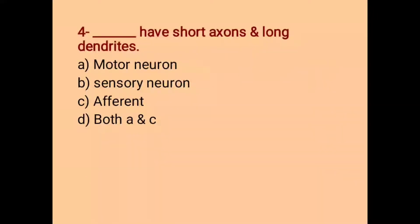Number 4. Dash have short axons and long dendrites. Option A, Motor Neuron B, Sensory Neuron C, Afferent Neuron and D, Both A and C. And the correct option is Both A and C.